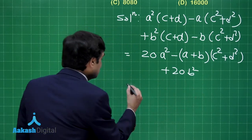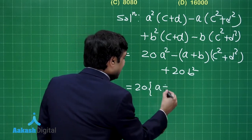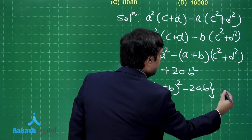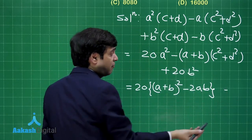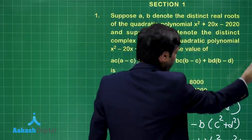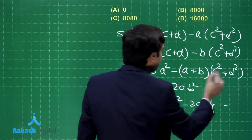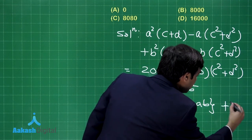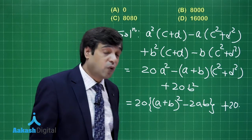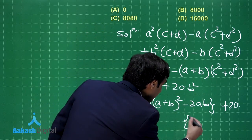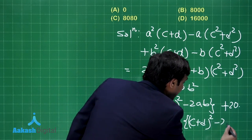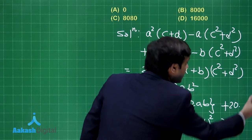So this is 20 times [(a + b)² − 2ab], minus (a + b)(c² + d²), plus 20b². The value of a + b is −20, so substituting here it becomes plus 20 times (c² + d²). Now c² + d² in the same fashion is (c + d)² − 2cd.